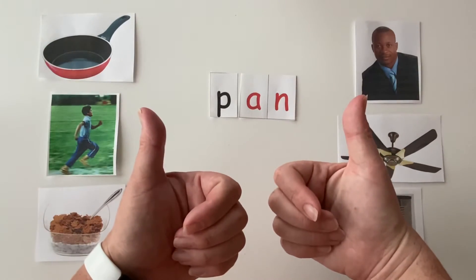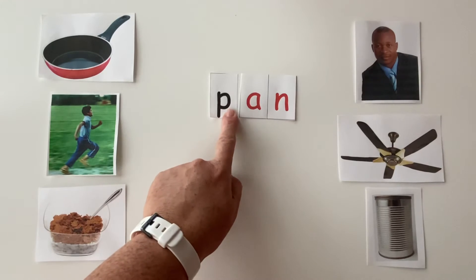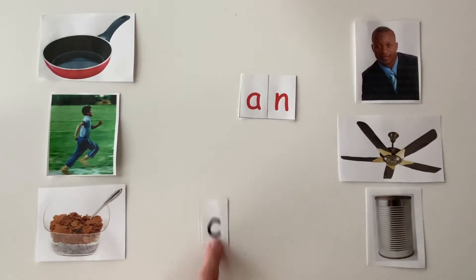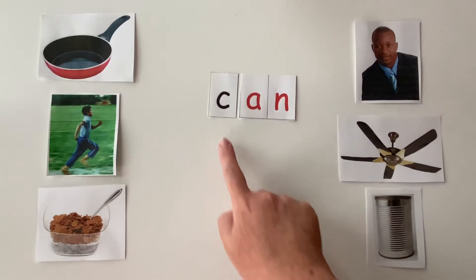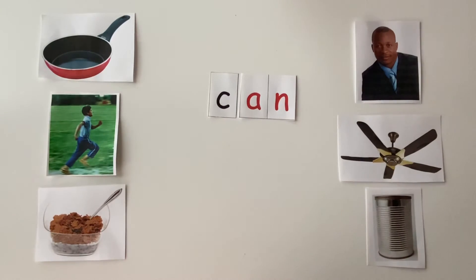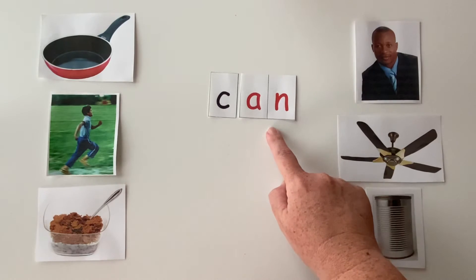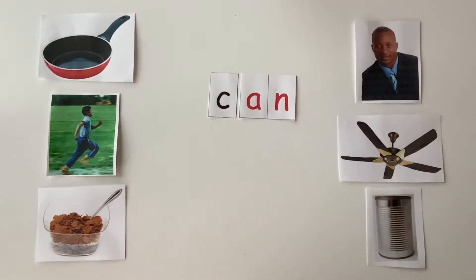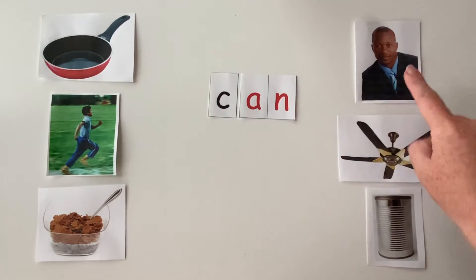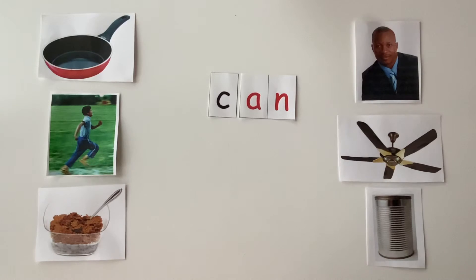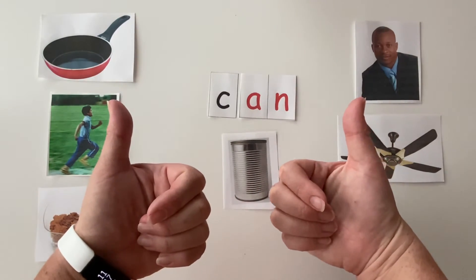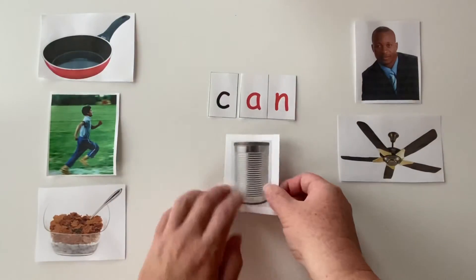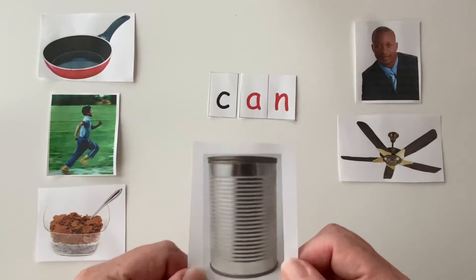You guys are doing awesome! If we change the P in pan to the sound that C makes — do you remember what sound C makes? That's right, K-k. Let's blend the word: K-k-an. K-k-an. Point to the picture that this word spells. If you chose can, you got it correct. Double high five! K-k-an spells can.